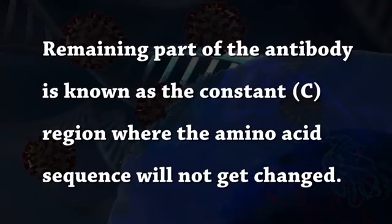In our body, there are so many pathogens involved in pathogenic reactions. Hence, antibodies specific to those antigens are synthesized by small variations in their populations. The remaining part of the antibody is known as the constant or C region, where the amino acid sequence does not change.